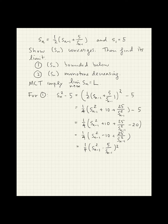And that is a positive number. So Sn squared minus 5 is greater than or equal to 0.